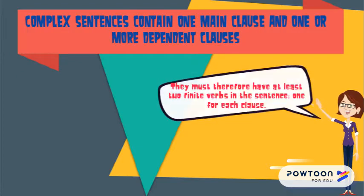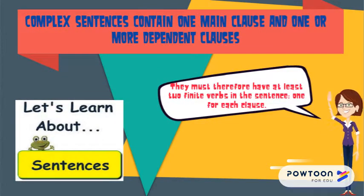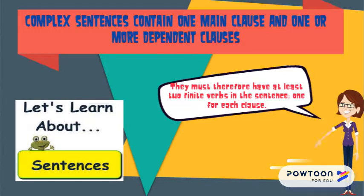Complex sentences contain one main clause and one or more dependent clauses. They must therefore have at least two finite verbs in the sentence, one for each clause.